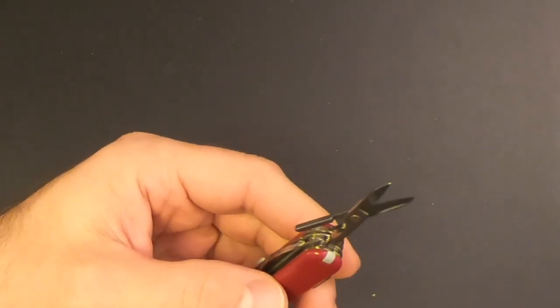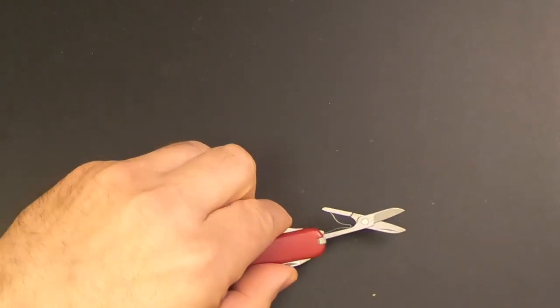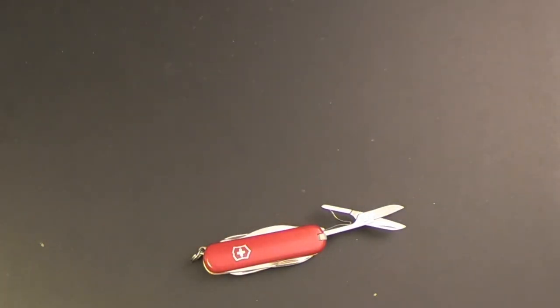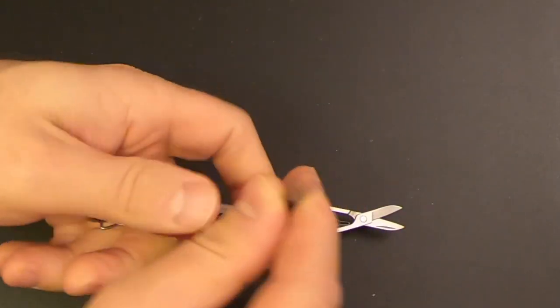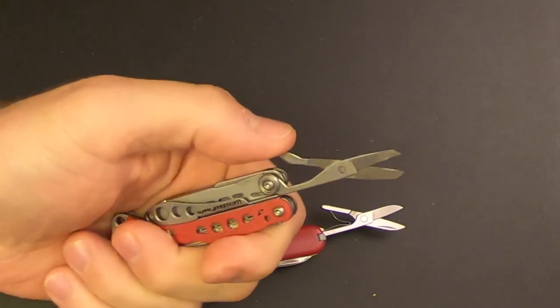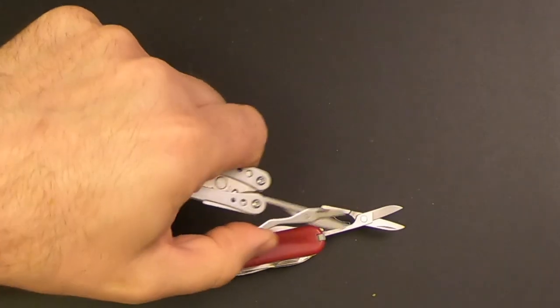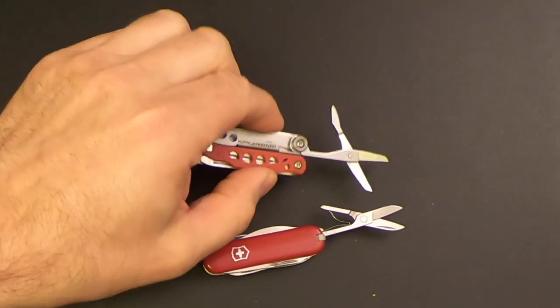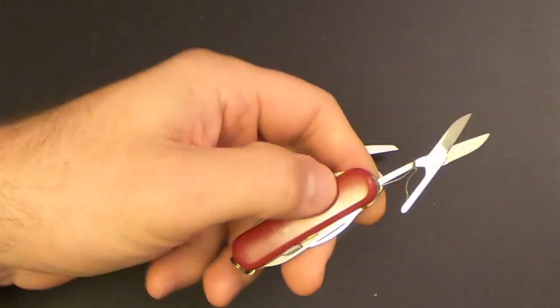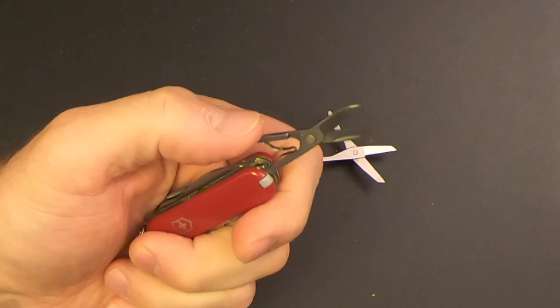I think Victorinox makes the best scissors on any pocket knife out there, including Leatherman. Now, I like Leatherman a lot. I'm actually a Leatherman collector as well. So don't think I'm bad-mouthing Leatherman. But for comparison, here's a Leatherman style PS. And the scissors are very well made. I actually think the spring mechanism on the Leatherman scissors is better than the spring mechanism on Victorinox. But overall, I just prefer the Victorinox scissors because they allow for a little more precision than the Leatherman scissors.